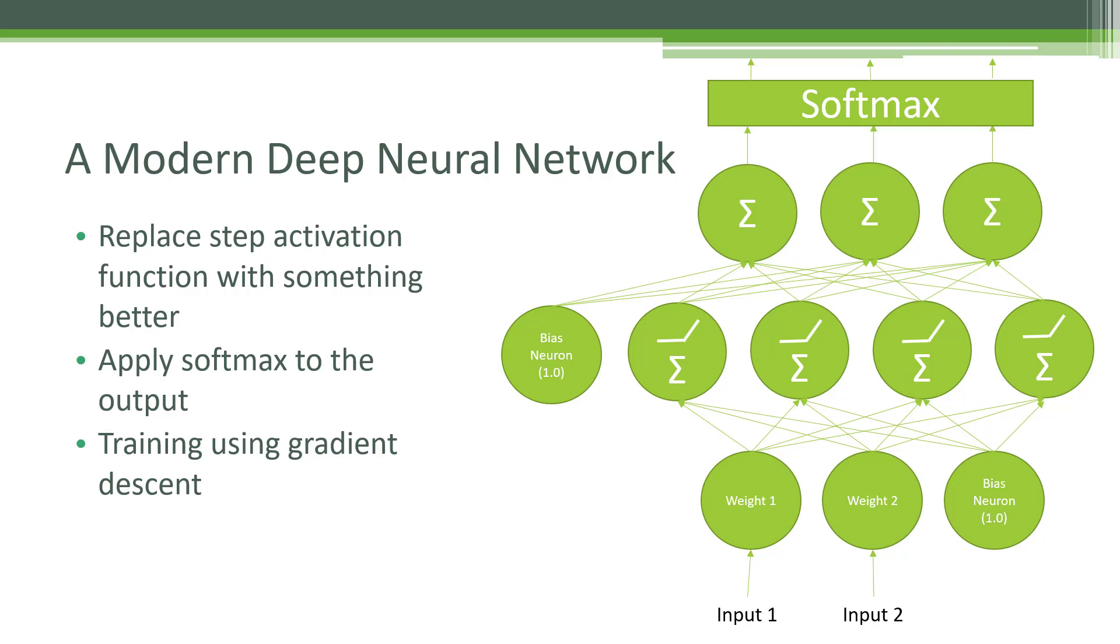We'll also apply softmax to the output, which we talked about in the previous lecture. That's just a way of converting the final outputs of our deep neural network into probabilities from which we can choose the classification with the highest probability. We will train this neural network using gradient descent or some variation thereof. There are several to choose from. Maybe that will use autodiff, which we also talked about earlier, to make that training more efficient.